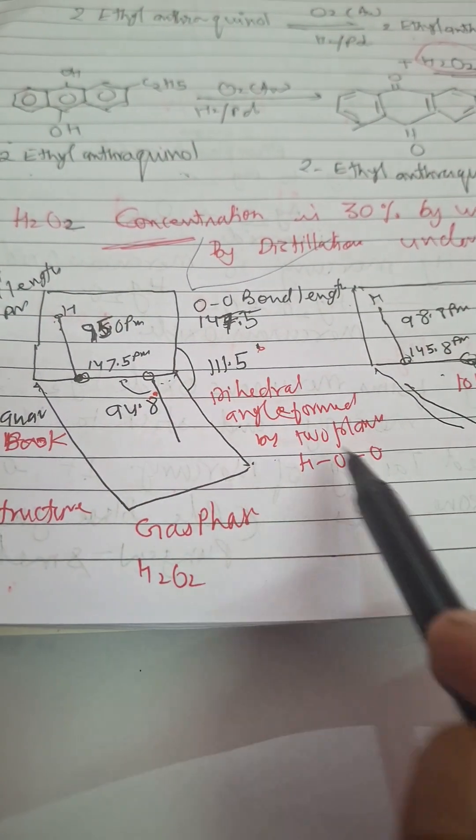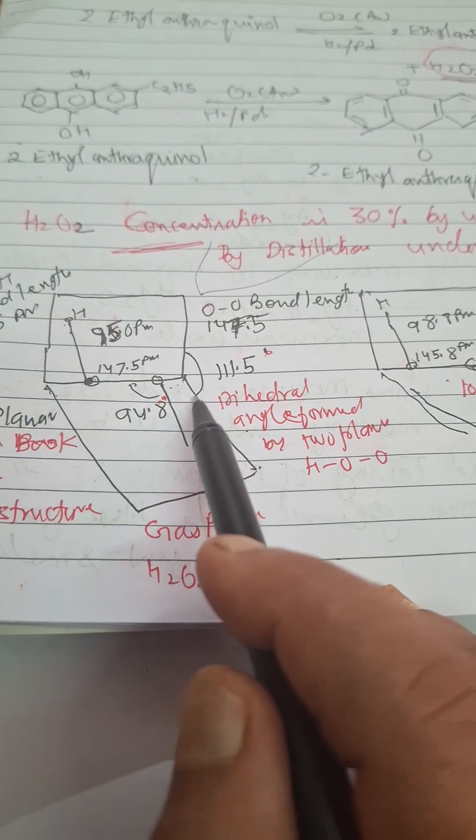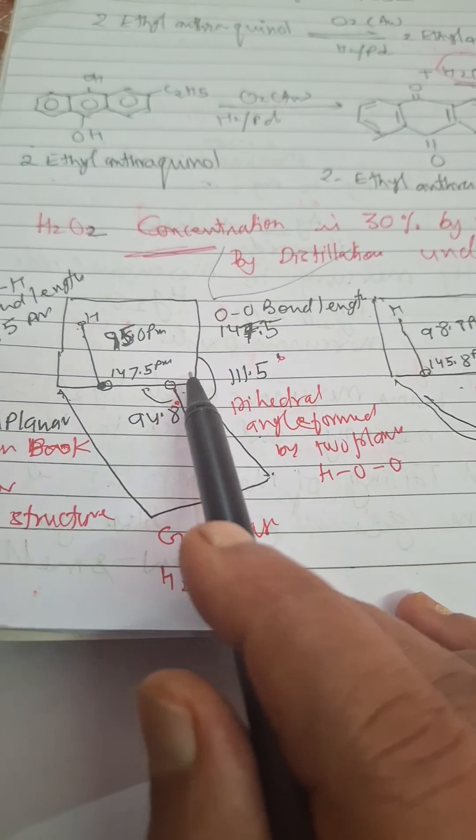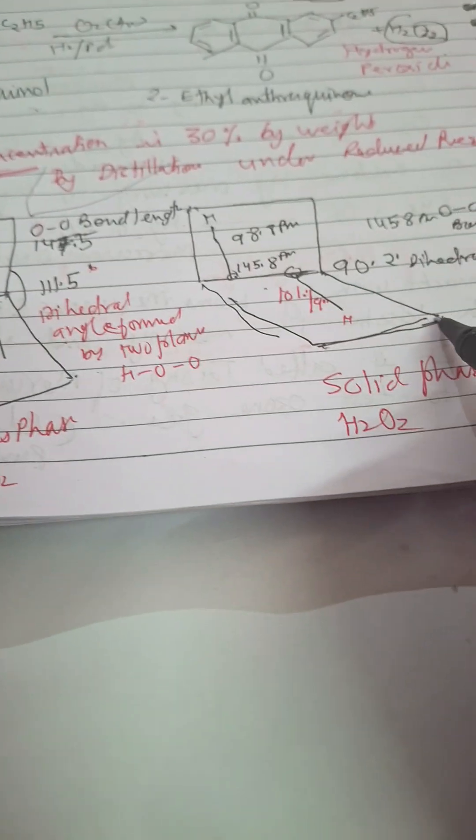Here HOO are in two planes, 111.5 degrees is the dihedral angle in gas phase and in solid phase it is 90.2 degrees dihedral angle.